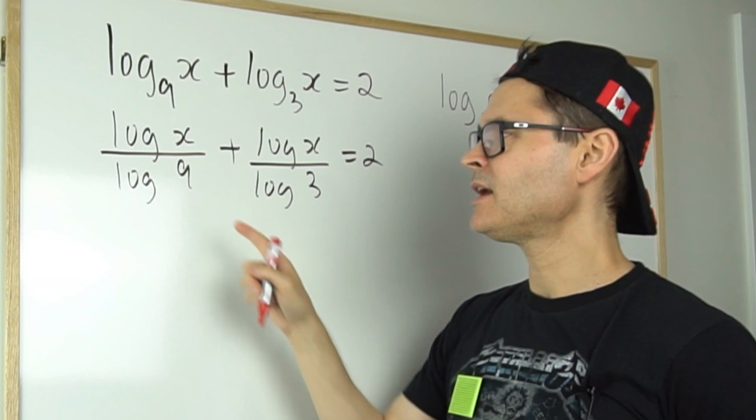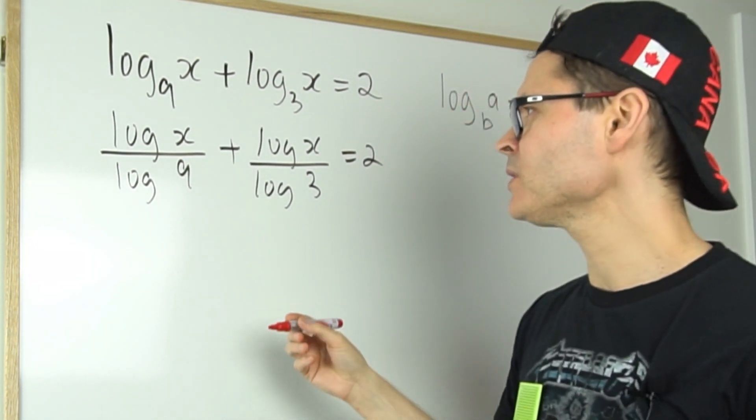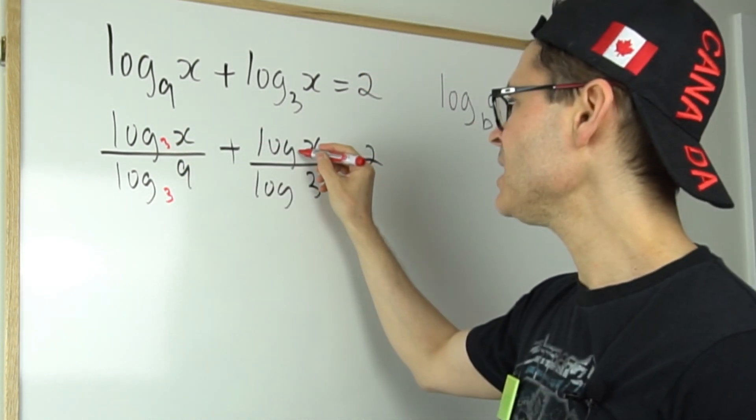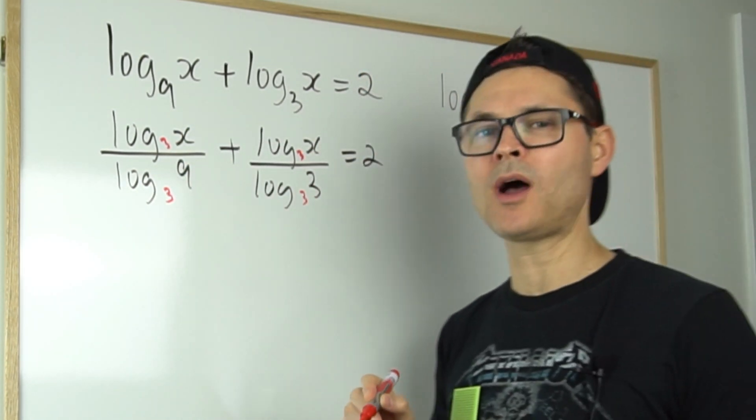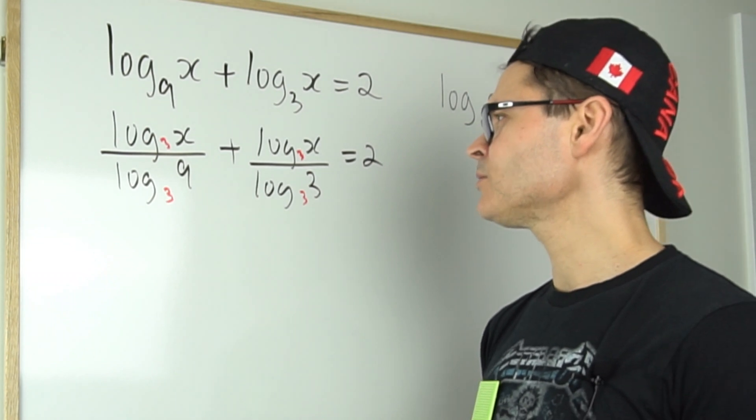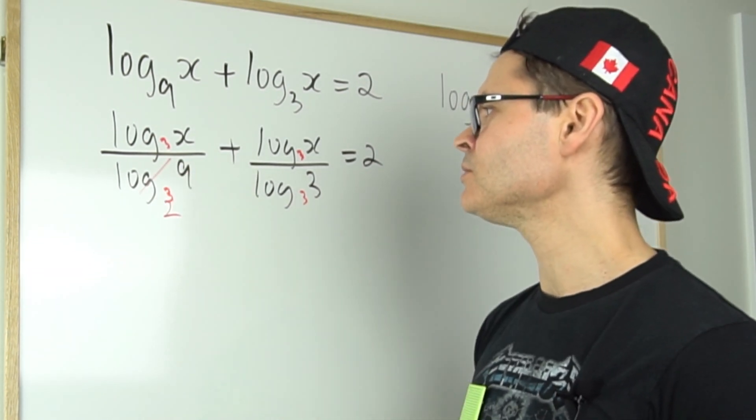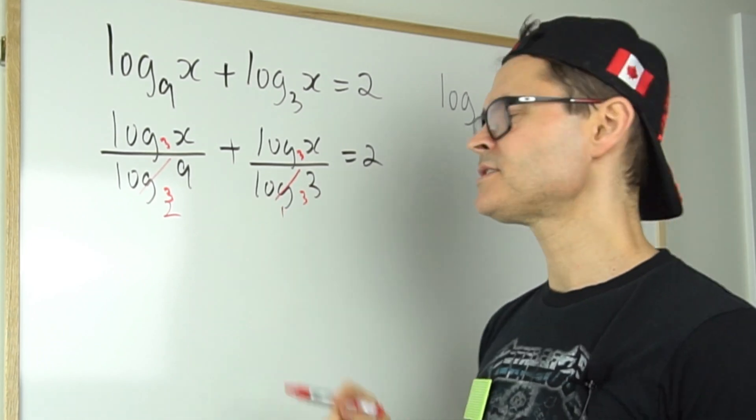So here you notice three and nine are both powers of three. So if I just decided to make that three and that three, and maybe that three and that three there as well, then you can see this is going to really simplify things because the log of nine base three is just two and the log of three base three is just one.